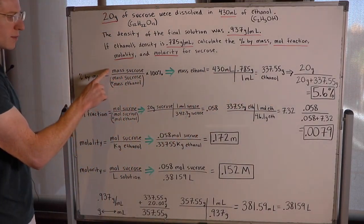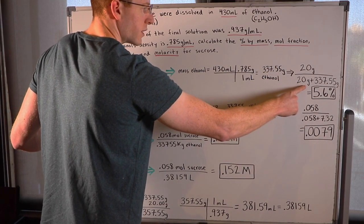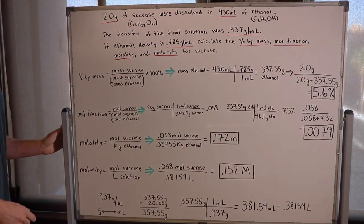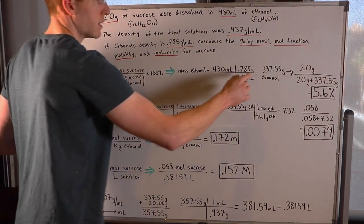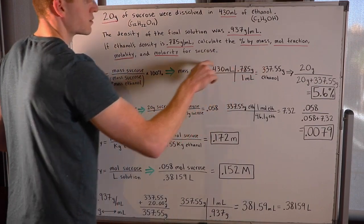So I went ahead and plugged all my numbers into this formula here. 20 grams over 20 grams plus 337.55 grams. And I was able to find that this solution has a 5.6% by mass of sucrose.